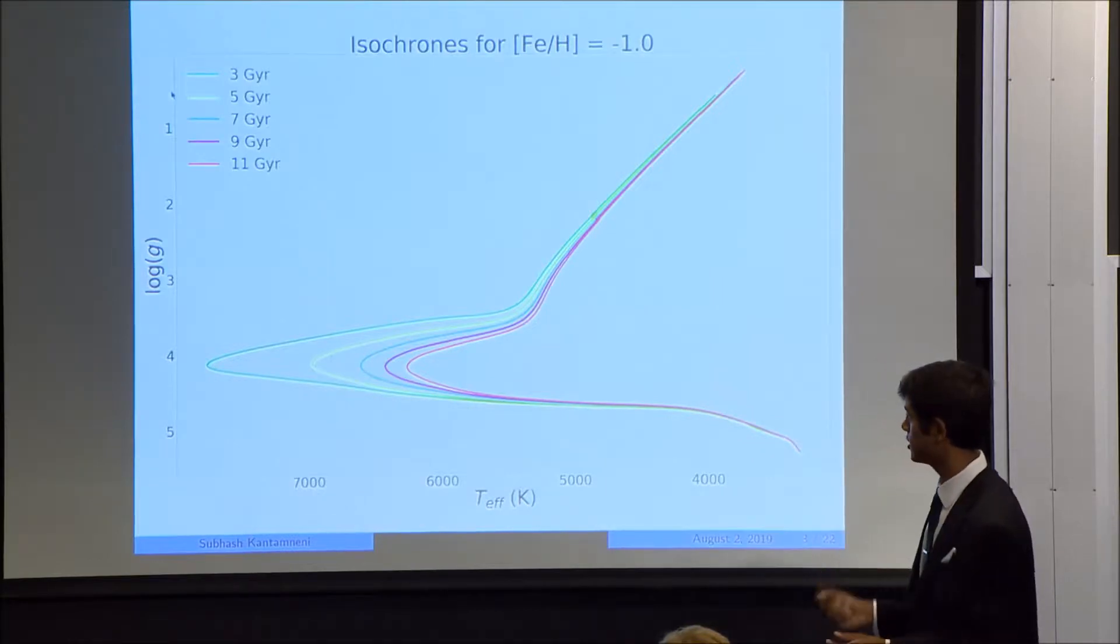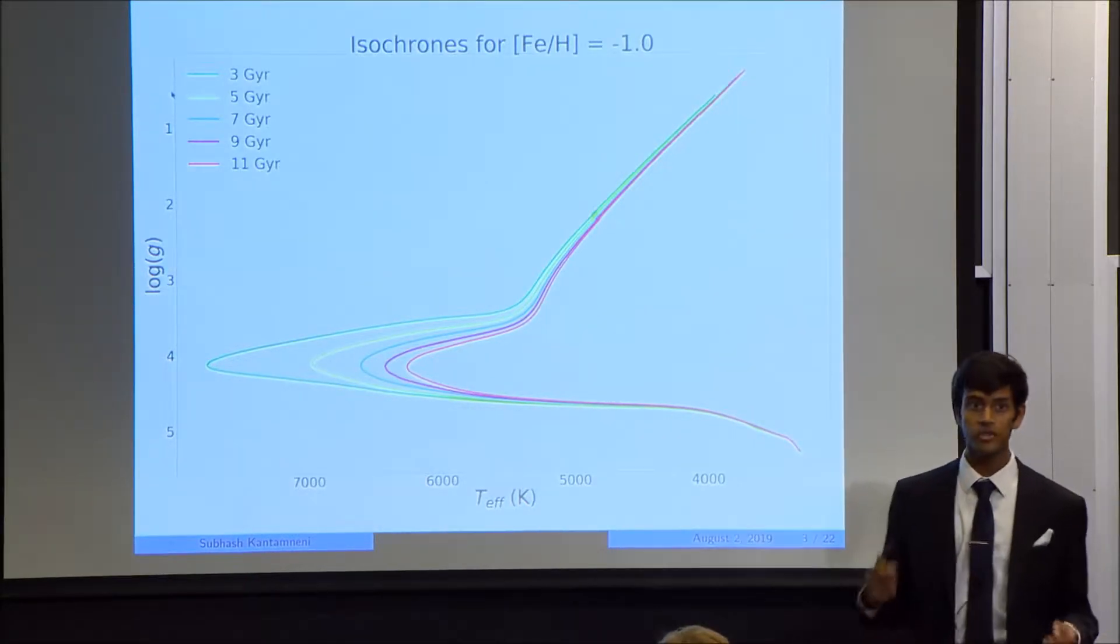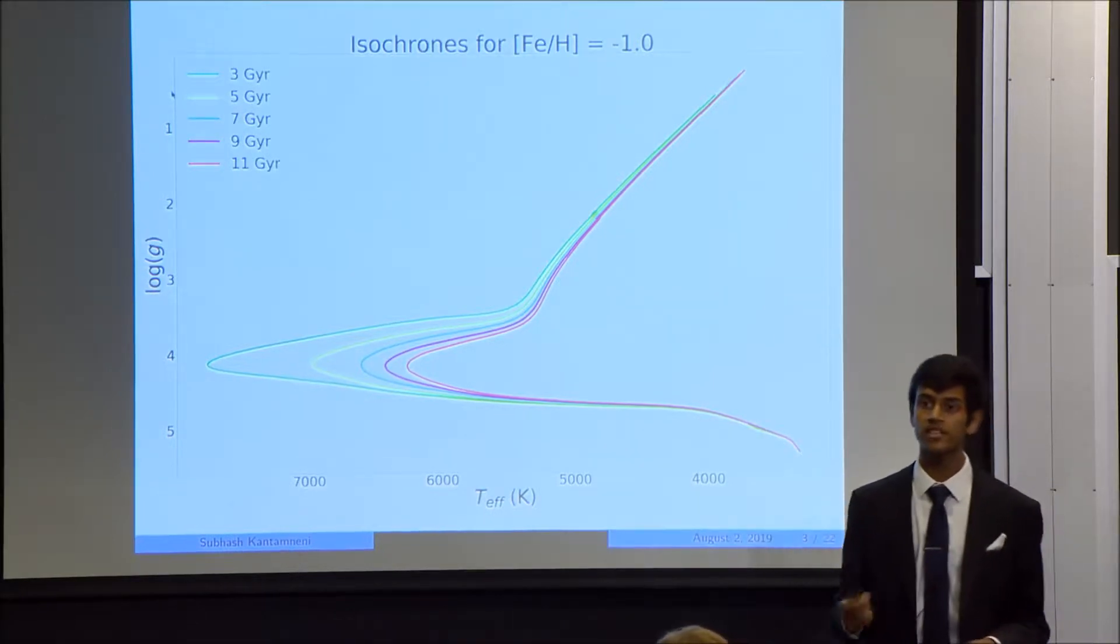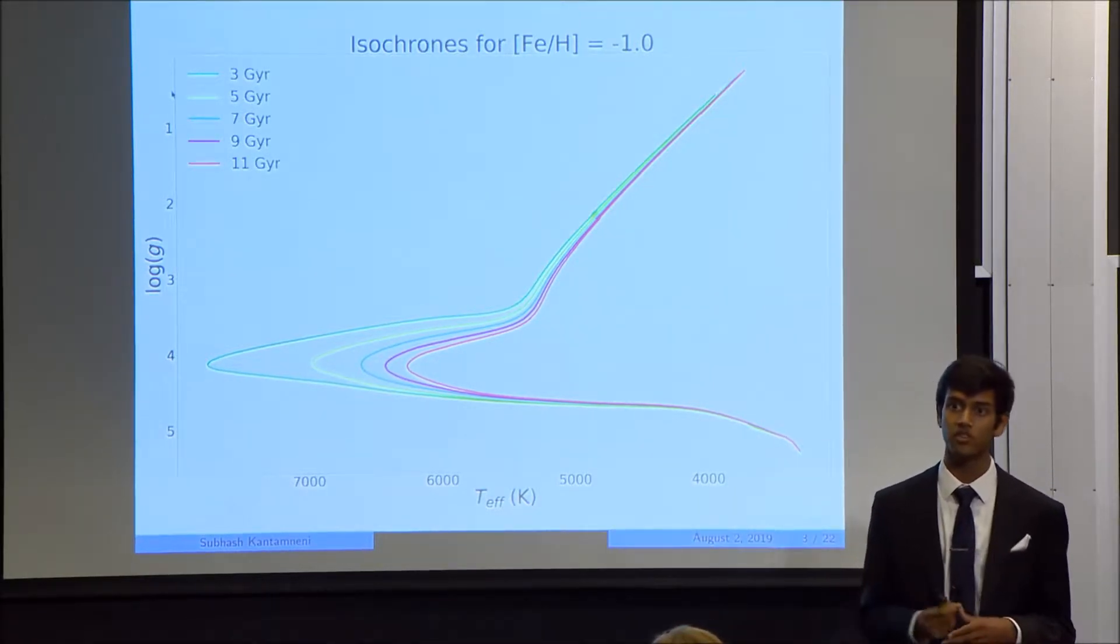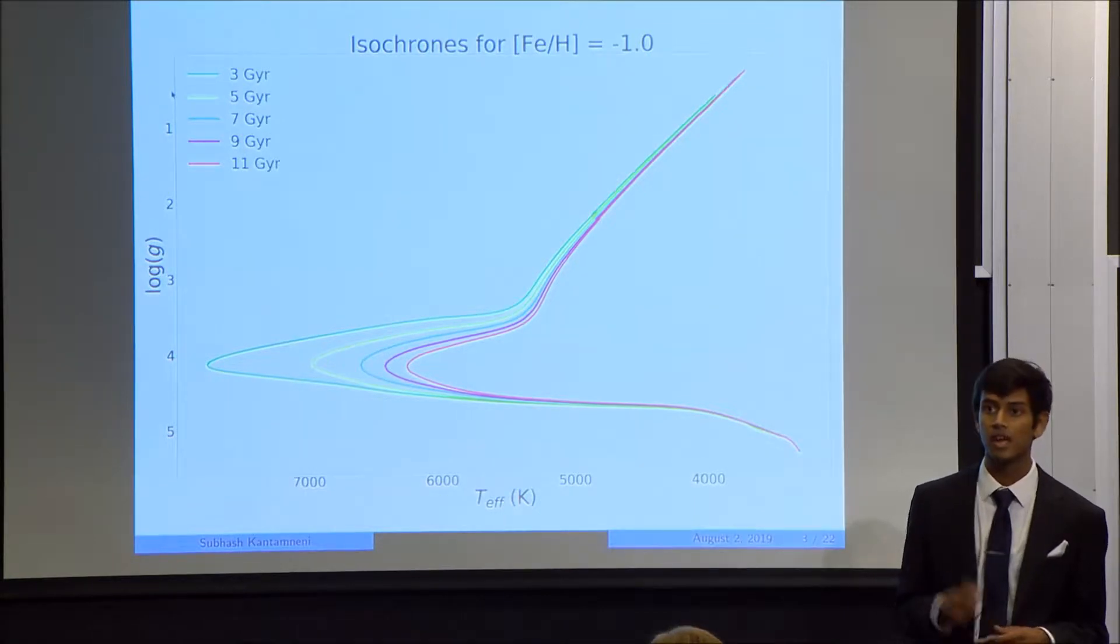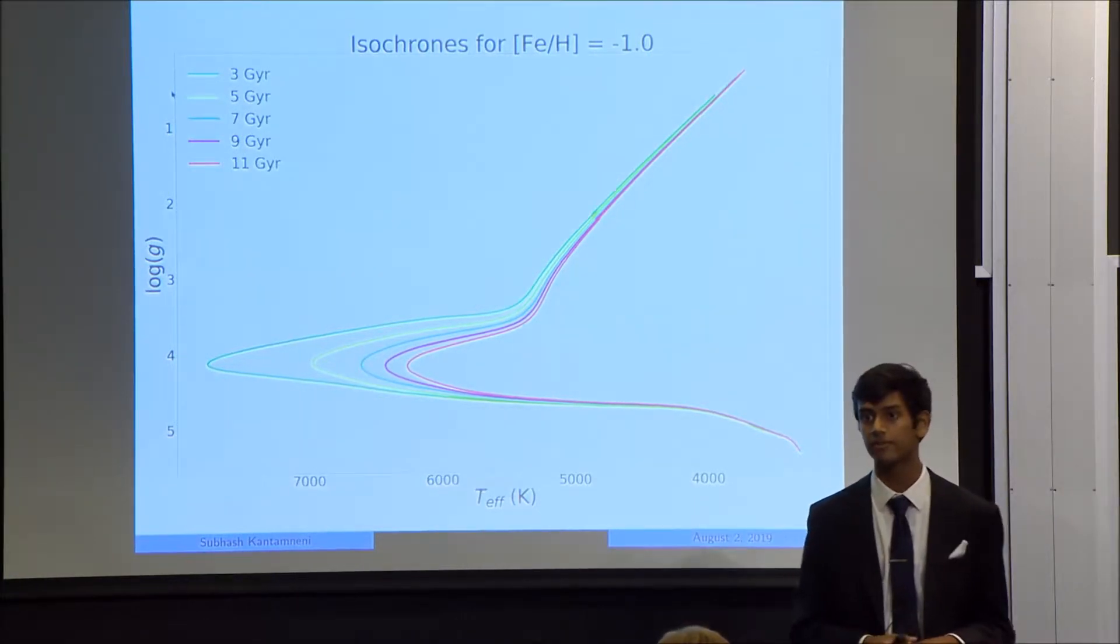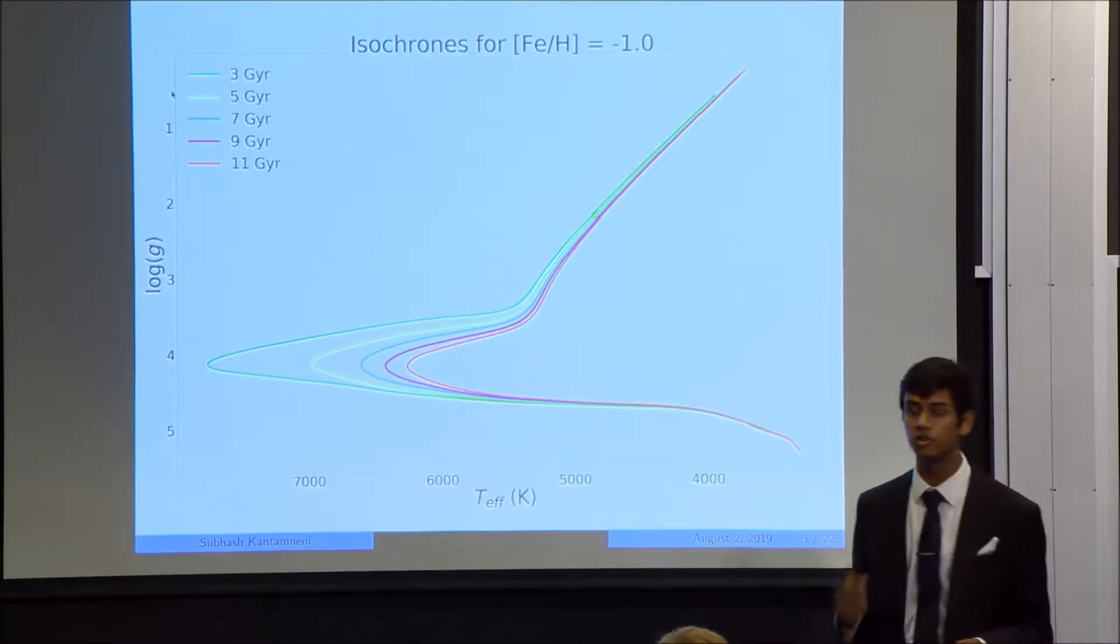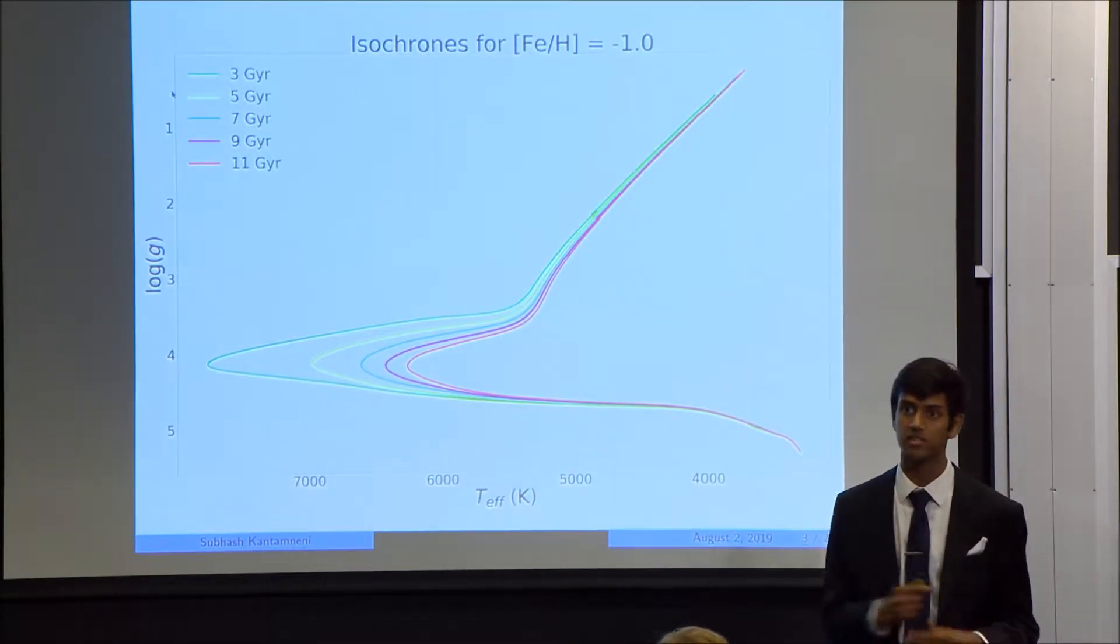But how do we create these theoretical isochrones in the first place? Using stellar models that simulate the life of a star given a starting metallicity and mass, we can take synthetic temperature and gravity observations throughout the lifetime of a star. And in this way, we can populate an isochrone graph. If we repeat this procedure for enough ages and metallicities, we can get a set of isochrones that can be used to calculate the age of virtually any stellar cluster.